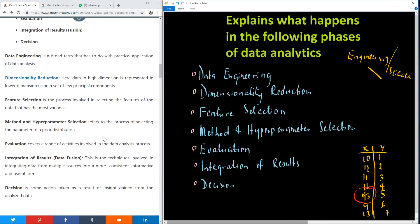Now let's talk about feature selection. Feature selection phase of data analysis is the process that is involved in selecting the features of data that has the most variance.